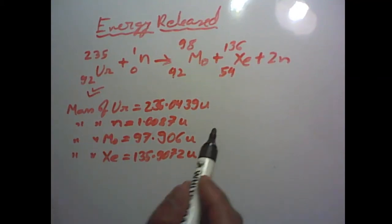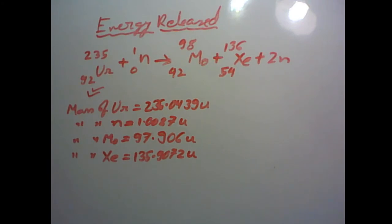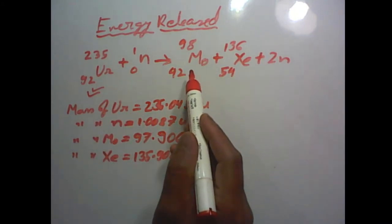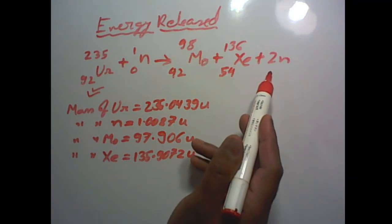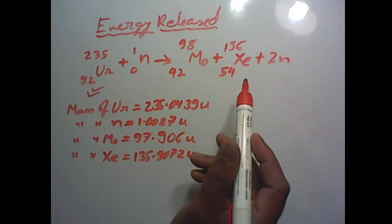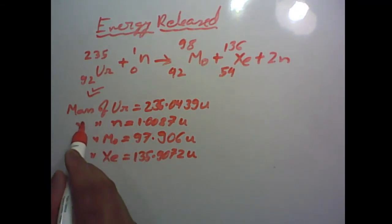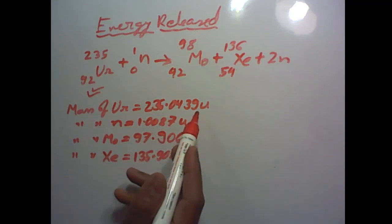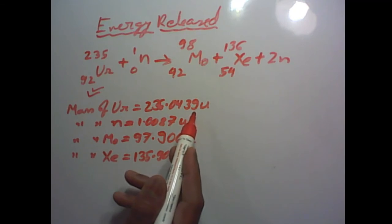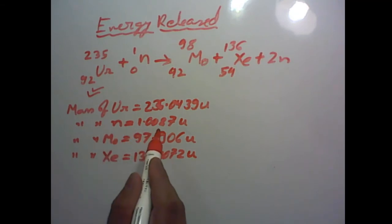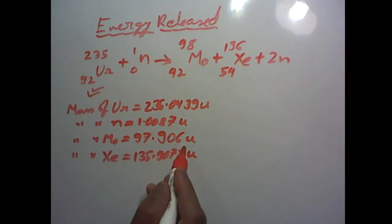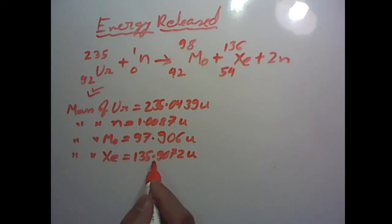To calculate the energy release in the fission process, consider a reaction in which a neutron bombards a uranium-235 nucleus, forming molybdenum-98 and xenon-136, along with the release of two neutrons. We are given that the mass of uranium-235 is 235.0439 U, the mass of a neutron is 1.0087 U, the mass of molybdenum is 97.906 U, and the mass of xenon is 135.907 U.